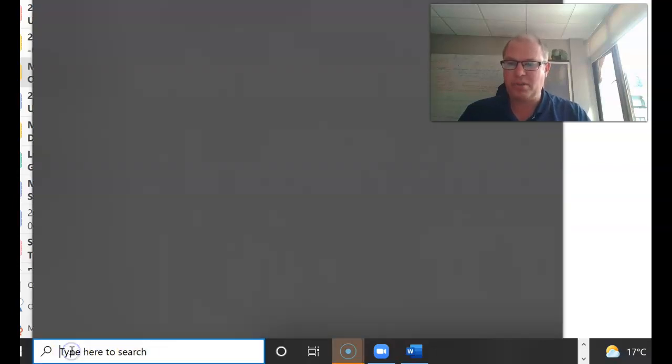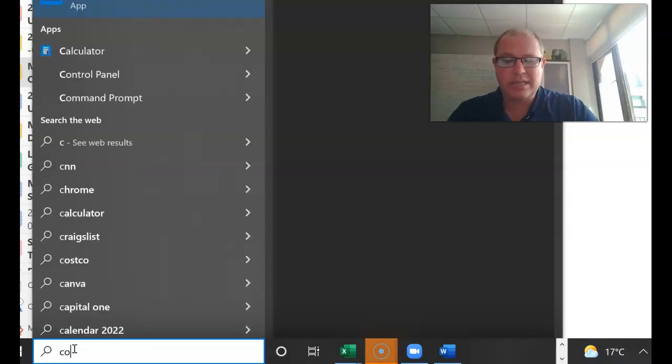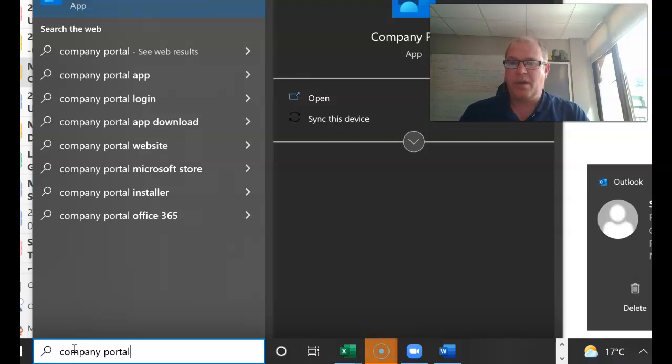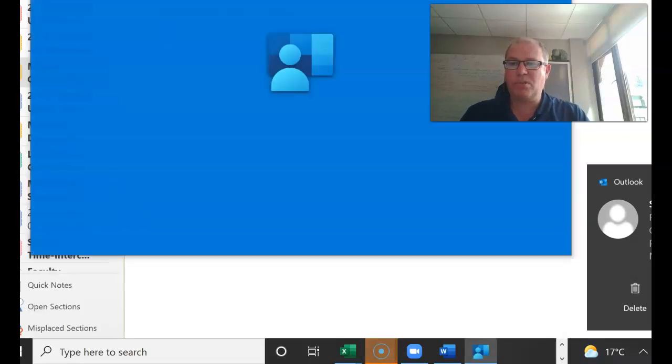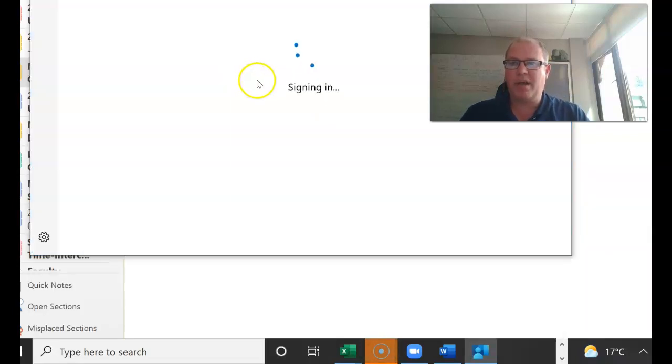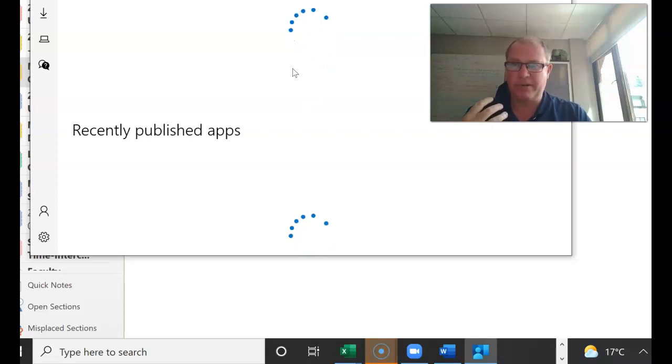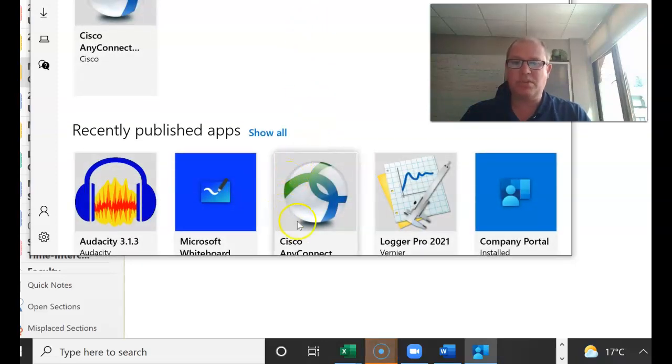First thing is to download Fathom. In the bottom left you need to type company portal and then once you open the company portal you're looking for a program called Fathom 2 and download that. As this is loading up you won't see it in mine because I've already downloaded it but you will see Fathom 2 and download that.